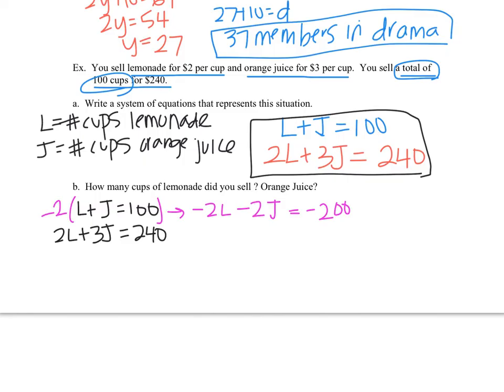So then I have negative 2L minus 2J equals negative 200. Now when I line it up with the other equation, you can see that the L's will cancel when I go to add. So those cancel, and I just have J is equal to 40. So that means that I sold 40 cups of orange juice.